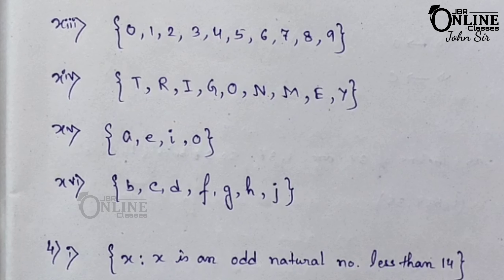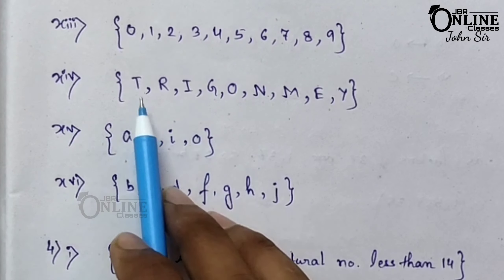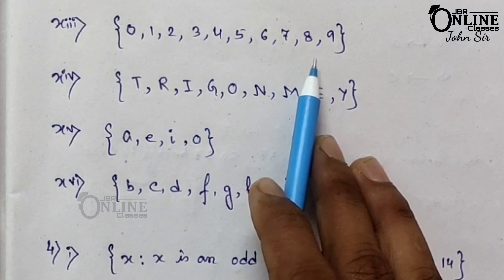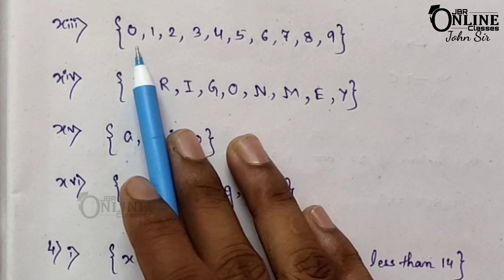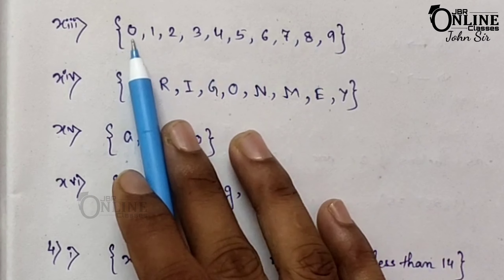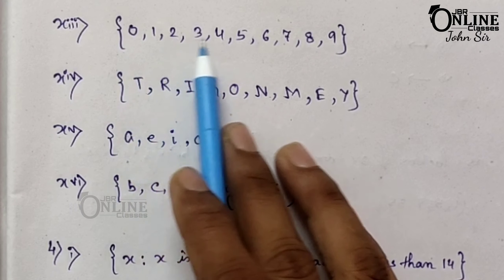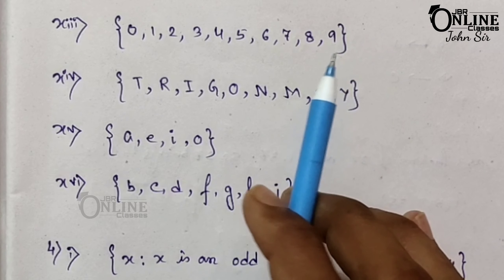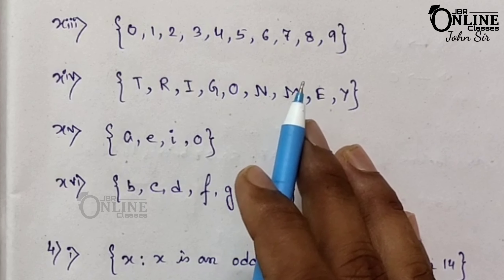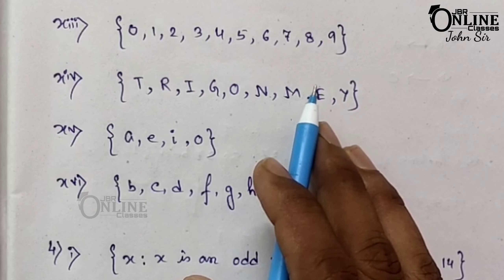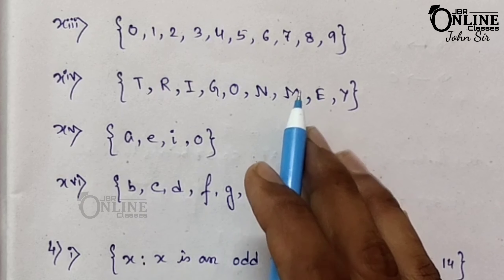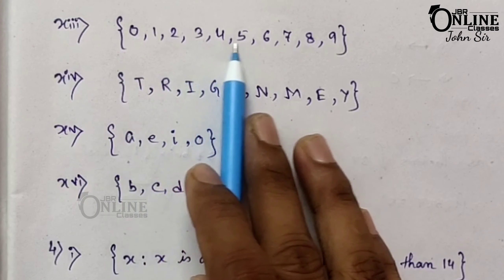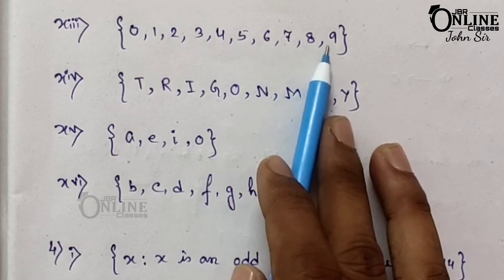Sum number 13: the set of all digits in our number system. In our number system, the set of all digits is 0, 1, 2, 3, 4, 5, 6, 7, 8, 9. Remember, you have to find the set of all digits, not all numbers. Digits means only 0 through 9.